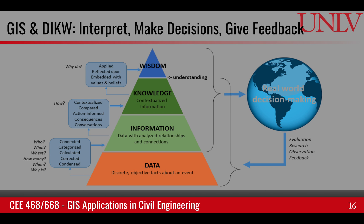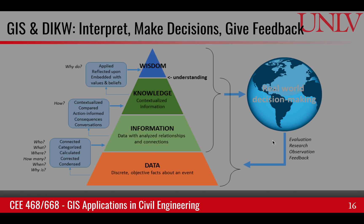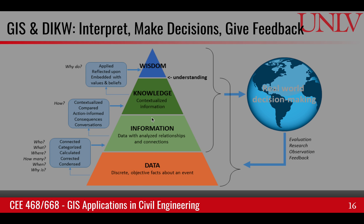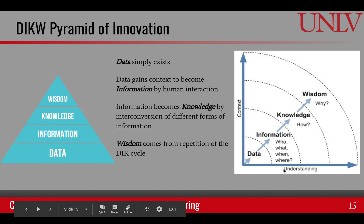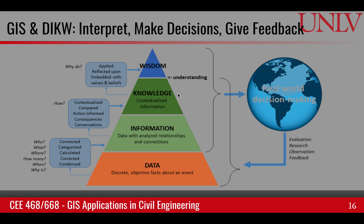Looking at the GIS and DIKW model together, data comes from the earth's surface and environment. GIS helps us create information, knowledge, and eventually wisdom from that data. On the understanding axis, this increases our understanding of space, and once we have better understanding, we can take actions and make decisions.